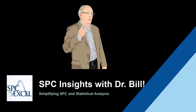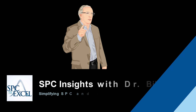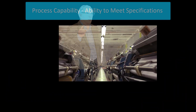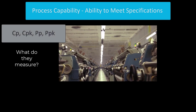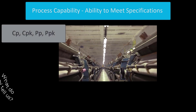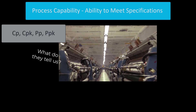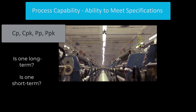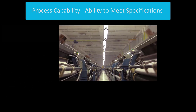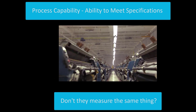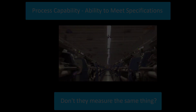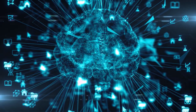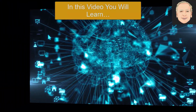Welcome to SPC Insights with Dr. Bill, simplifying SPC in statistical analysis. This video is going to take a look at process capability and the four metrics that we use to measure process capability. What do they really measure? What do they tell us about our process and specifications? Is one long-term? Is one short-term? Don't they measure the same thing? Well, they really don't measure the same thing, as we will see. So in this video, we're going to go back and review the four metrics of process capability.